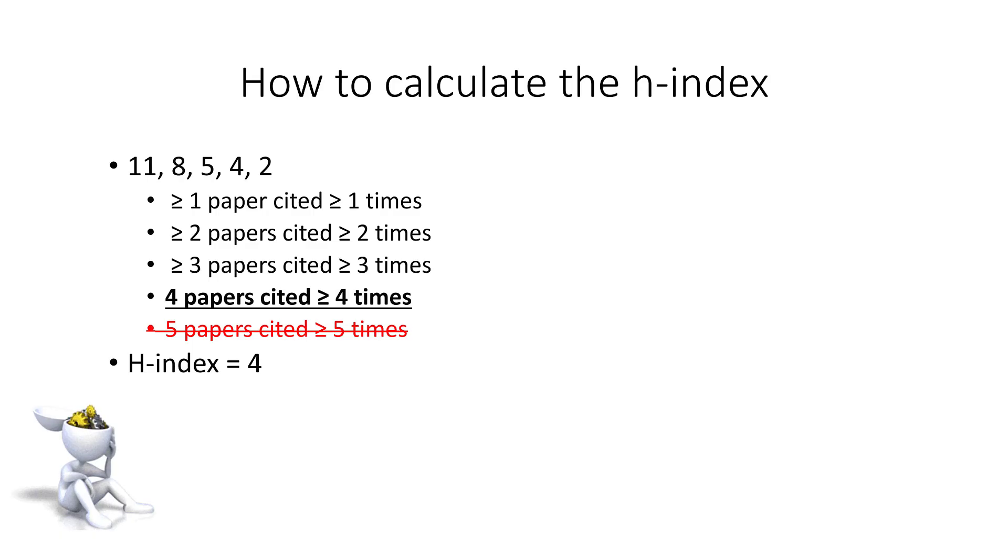In the next example, we have at least one paper cited at least one time, at least two papers cited at least two times, at least three papers cited at least three times, and we have four papers cited at least four times, but we don't have five papers cited at least five times, so the H-Index is here four.